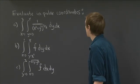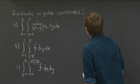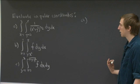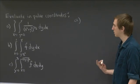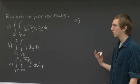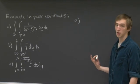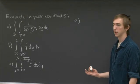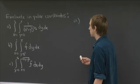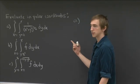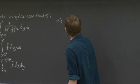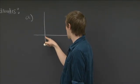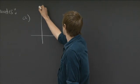Welcome back. Let's get started. For all of these, when we're transferring from rectangular to polar coordinates, the most difficult part is understanding what region we're integrating over. And if we can understand that, then the rest is just straightforward calculation. So in part a, let's think about what this region is. We're given the region from x equals 1 to x equals 2.